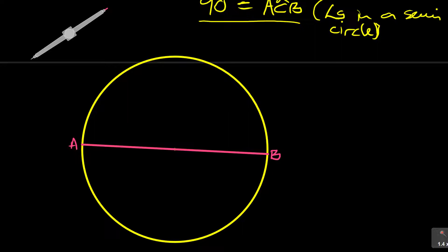Any angle that I'm going to subtend on the circumference will be a 90 degree angle. For example, if I move from A — let's say I've got certain points here. I've got a point here, I'll call it point C. And then I've got a point here, I'll call it D. And then I've got a point — just random points — I've got a point here, point E, and maybe lastly I've got a point here, point F.